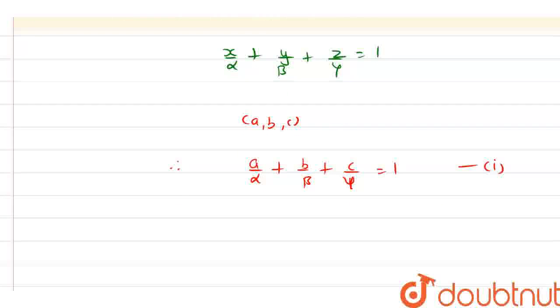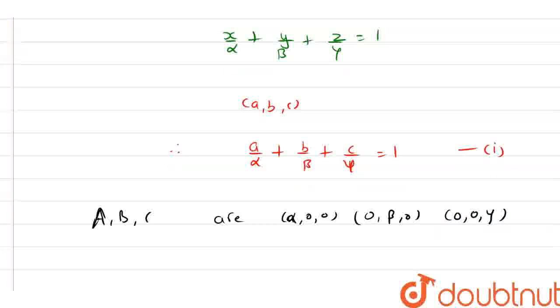Now, the coordinates of the points A, B and C are: alpha comma 0 comma 0 for point A; 0 comma beta comma 0 for point B; and 0 comma 0 comma gamma for point C respectively.